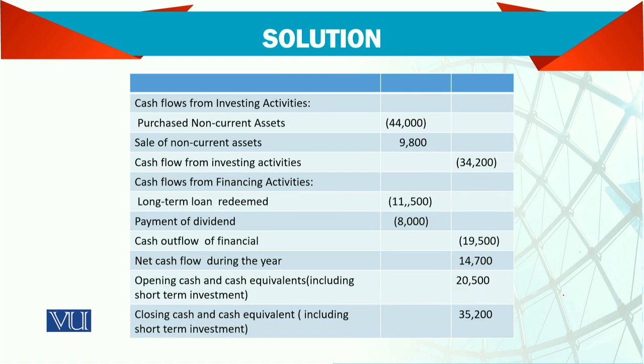Now we have cash flow from investing activities. We have purchase of non-current assets of 44,000, and we have sale of non-current assets of 9,800.